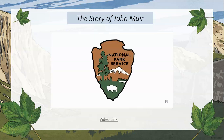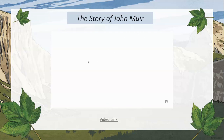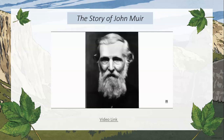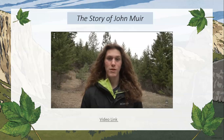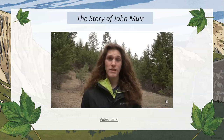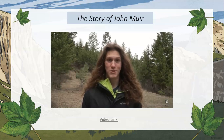Unfortunately, Muir did not get to see the National Park Service Act be enforced or see the conservation movement start, as he died on December 24th, Christmas Eve, 1914, from pneumonia. He was 76 years old. John Muir was a farmer, inventor, sheepherder, explorer, and writer, and he was America's most influential naturalist and conservationist. He remains an inspiration to environmental activists everywhere, even to this day.